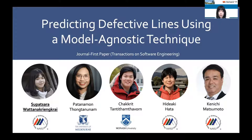Briefly, in this work, we propose a framework to identify defective lines using a model-agnostic technique that provides information about why the model makes such a prediction.